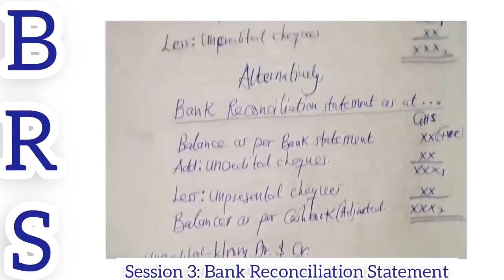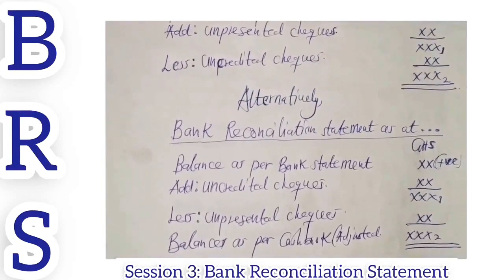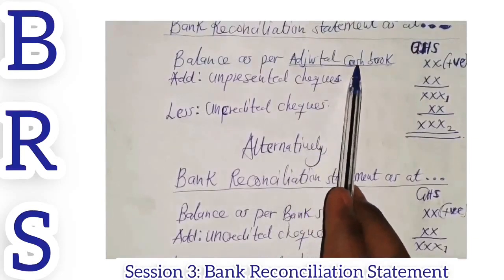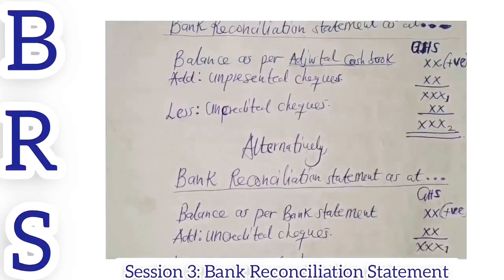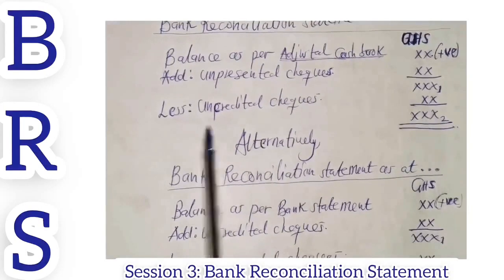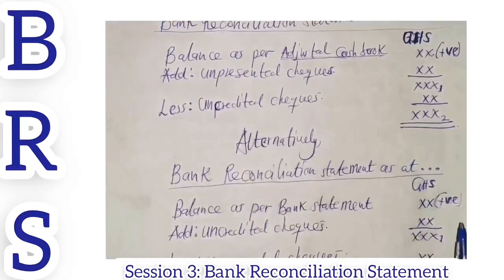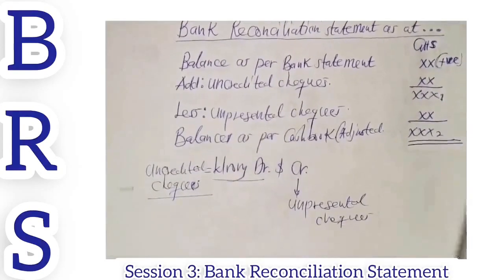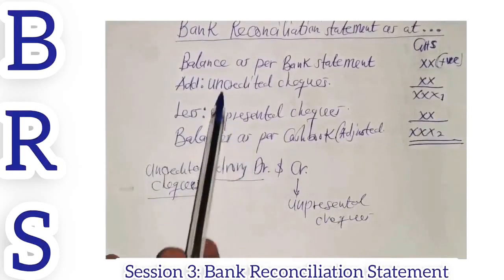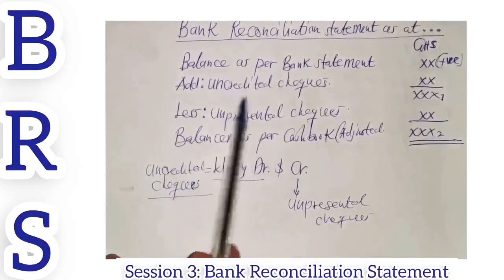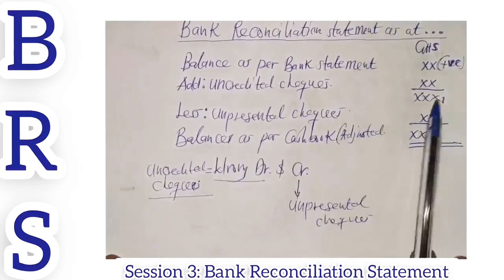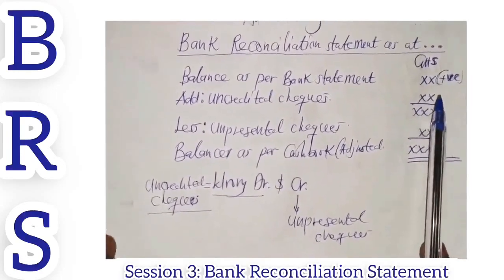For example: if you have a wrong debit and you are using the adjusted cash book, you treat the wrong debit on the same basis as uncredited checks — meaning you would deduct the wrong debit. But if you are using the bank statement balance and you have a wrong debit, you would add it to the bank statement balance. The same logic applies for wrong credit.